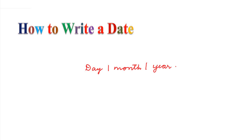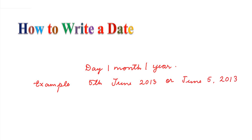How to write a date: the date of any day is written using three figures — one for the number of day, then for the month, and then for the year. For example, 5th June 2013: the day is 5, June is the 6th month, and the year is 2013. So we write it as 5/6/2013.